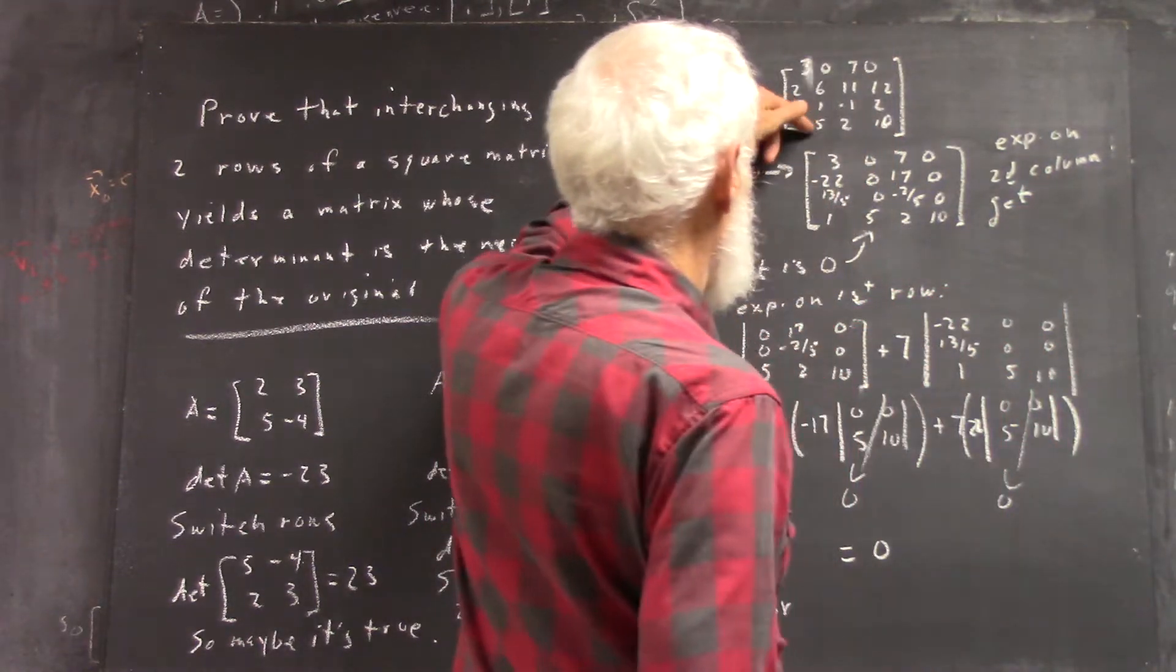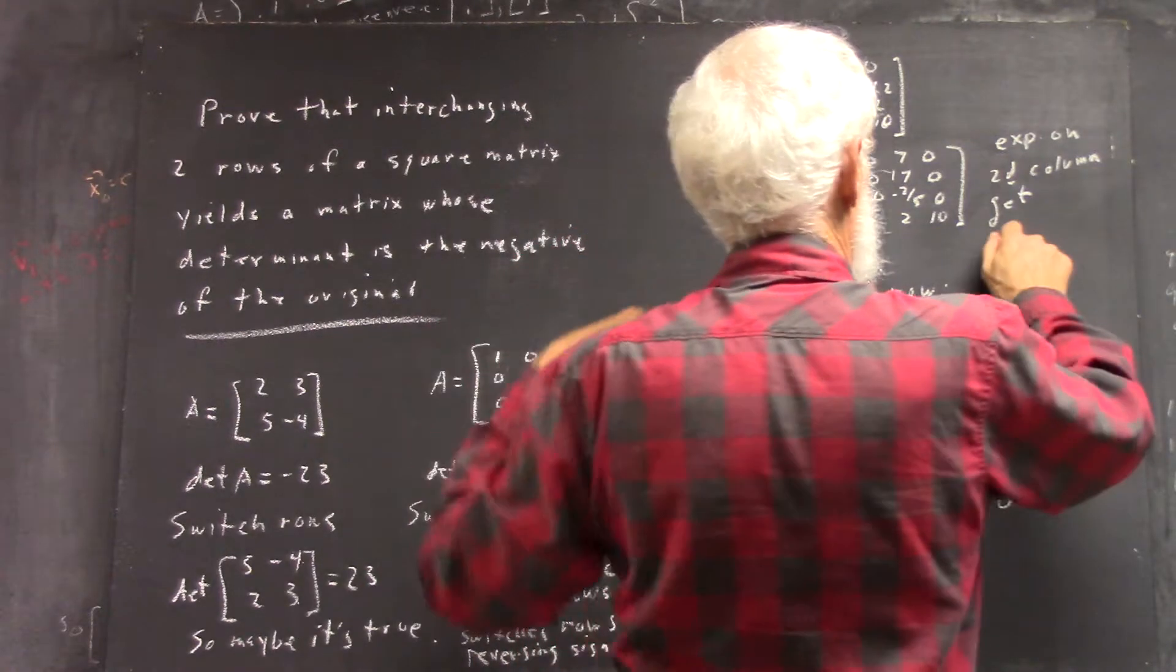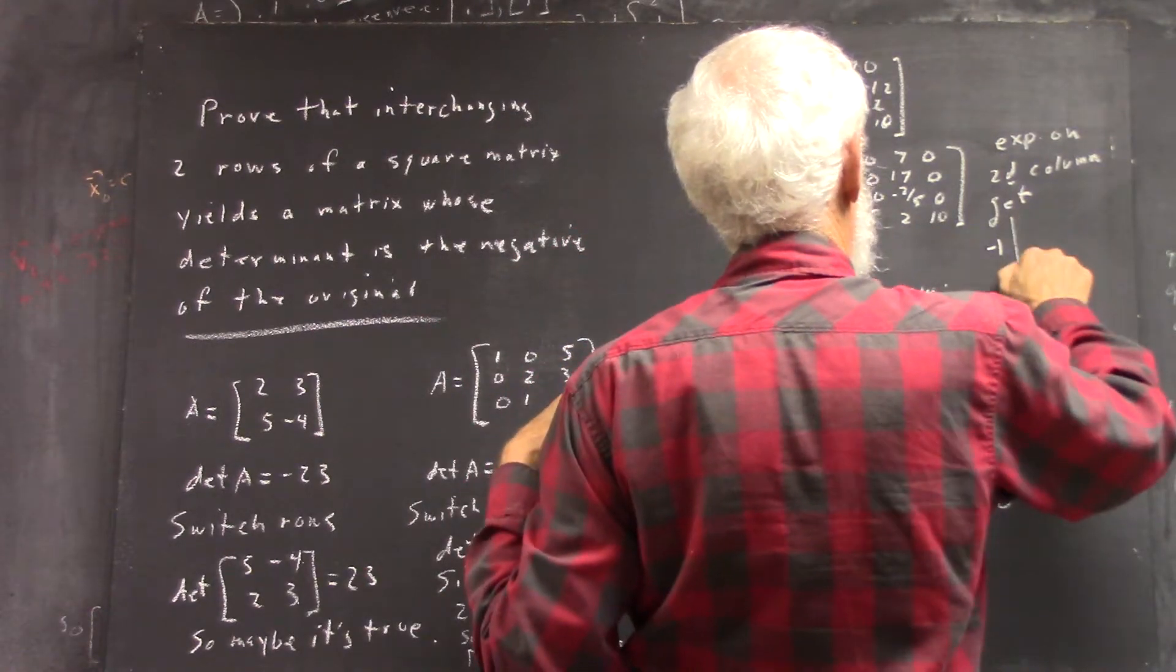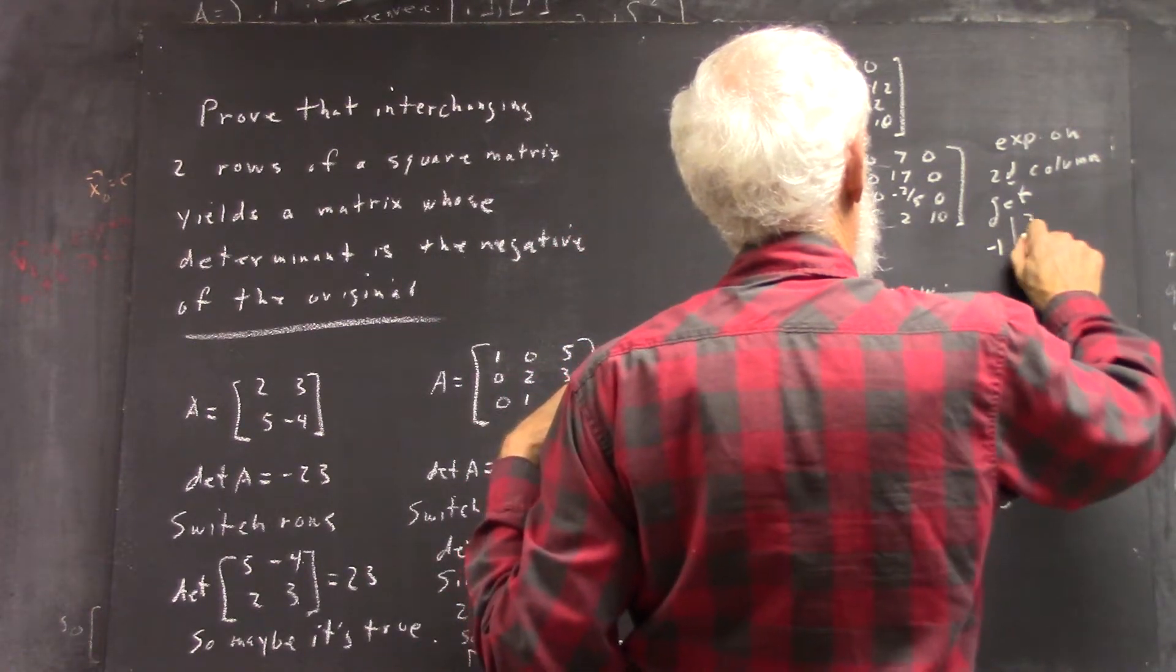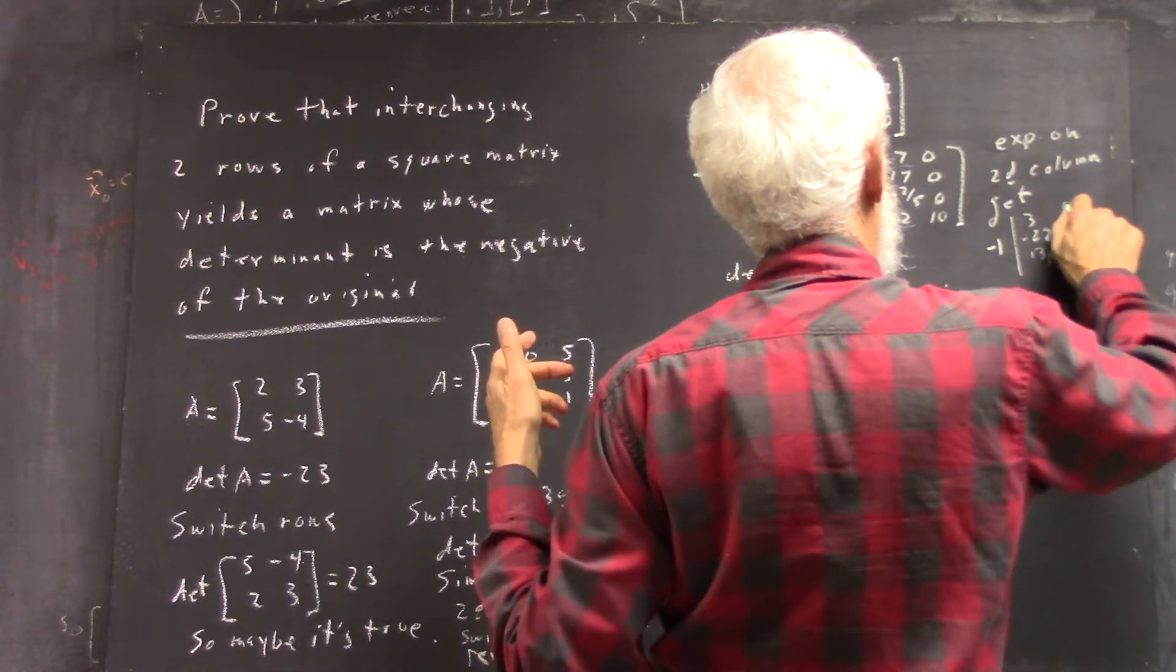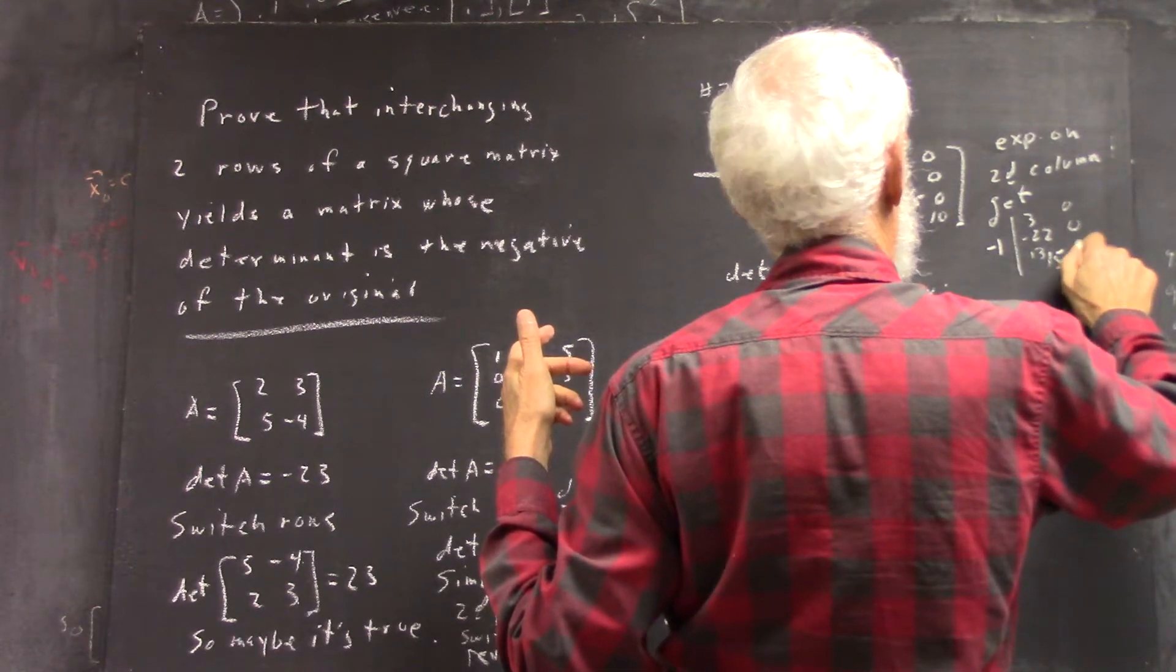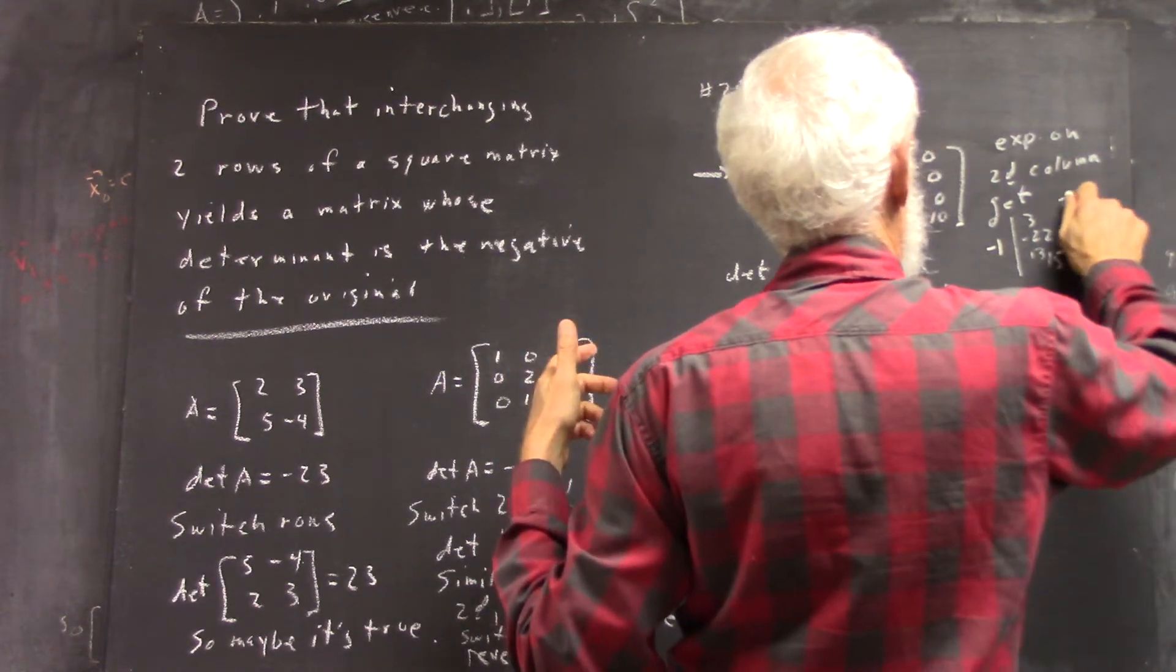Yeah, let's see - that's four and one is five, right? That's negative one times the determinant of three, negative 22, 13 fifths, zero, zero, zero...